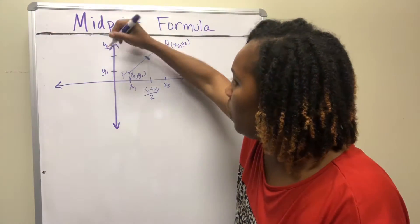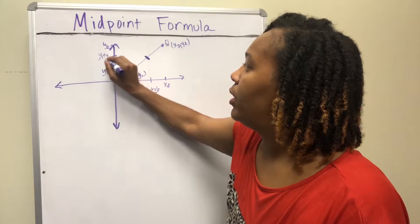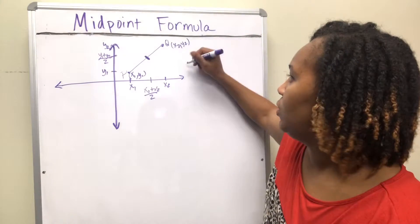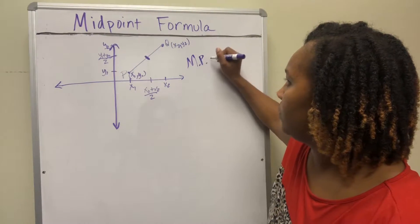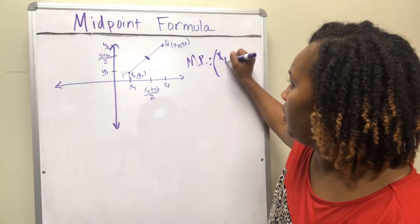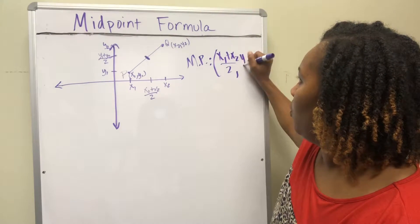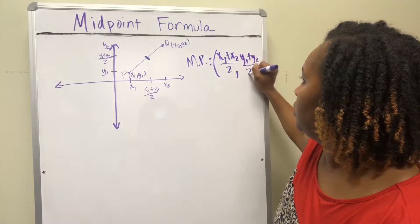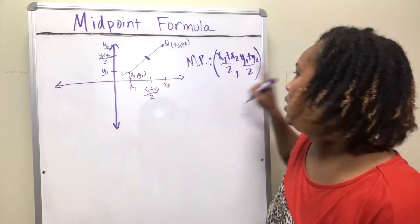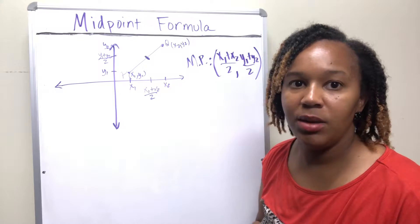Same thing here: if I want to find the y that's directly in the middle, I will add y1 and y2 and divide by two. And so that's where your midpoint formula comes from. It is (x1 + x2)/2 and (y1 + y2)/2. In other words, it's the average of the x's and the average of the y's — and that's how you find the midpoint.